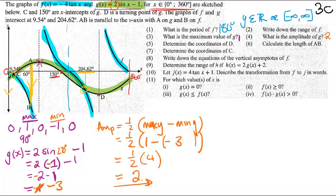Next, they want to know the coordinates of D. D is the turning point for the G graph, which is the sine graph. We've just done that. So our G graph is here. At D, we have the turning point. We know that the coordinates are going to be 270 degrees and negative 3. That is the coordinates for D.